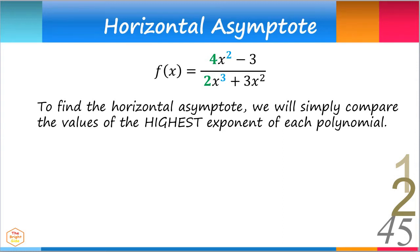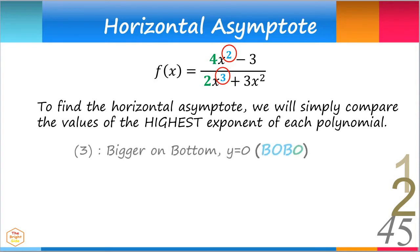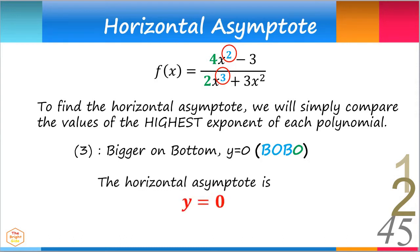In the numerator, the highest exponent is 2, and in the denominator, it is 3. Notice that the exponents are bigger on the bottom. This means the horizontal asymptote is y equals 0.